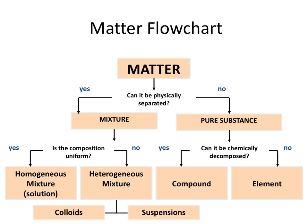If we answered yes to uniform composition — meaning you can't tell that something is dissolved in it, it's see-through — that's going to be a homogeneous mixture. So in that situation, we have a uniform composition, we can see through the solution, and we have a homogeneous mixture.